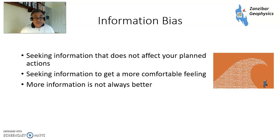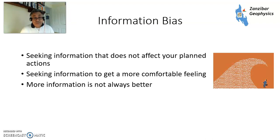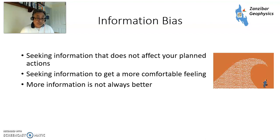Information bias — seeking information that does not affect your planned actions. Something gives you a nice, warm, comfortable feeling, or you say let's do more studies anyway. But more information is not always better. We can take a lot of time, quite a lot of money, and quite a lot of effort to get information which may not change your future actions anyway, particularly if you're looking for information that's unlikely to change those actions. So that's something to look at.